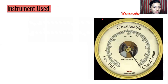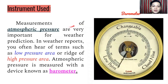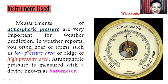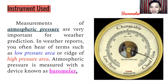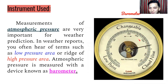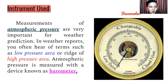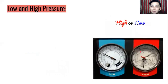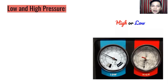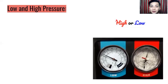What is the instrument used to measure atmospheric pressure? Measurements of atmospheric pressure are very important for weather prediction. In weather reports, you often hear terms such as low pressure area or high pressure area. Atmospheric pressure is measured with a device known as a barometer. As you can see, it will change from time to time — it can be at its low point or at its highest point, and it is very changeable.